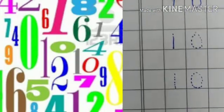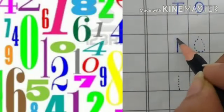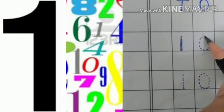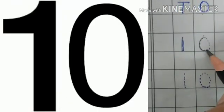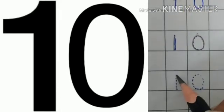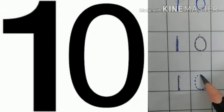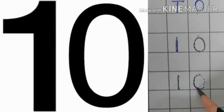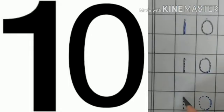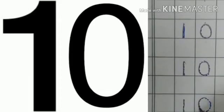Now, I will tell you how to write 10. You have to write first 1 then a 0 like this. One more time. Write 1 and a 0. Write 1 and a 0.